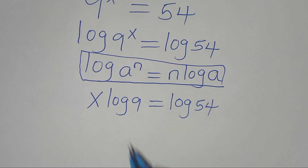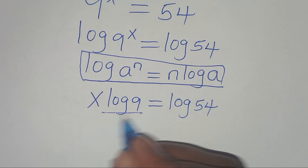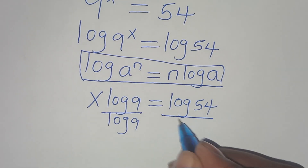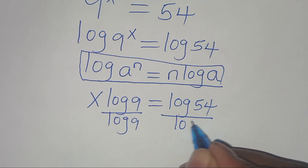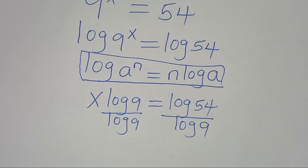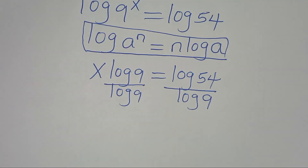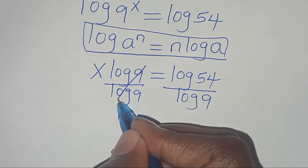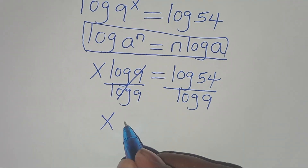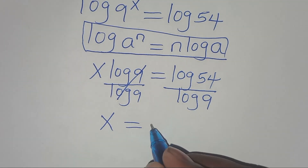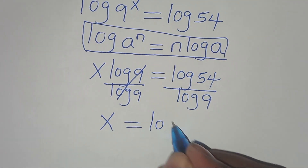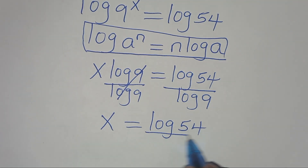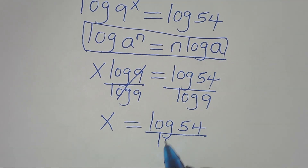Let's divide both sides by log 9 — here, and also here by log 9. Let's simplify: log 9 and log 9 cancel, so that x is equal to log 54 divided by log 9.